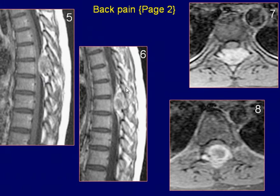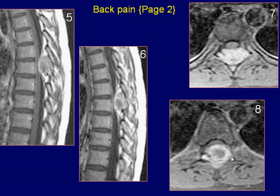Sagittal post-contrast T1-weighted images demonstrate heterogeneous enhancement of the lesion. Axial post-gadolinium fat-saturated T1-weighted images again demonstrate an enhancing lesion with a central non-enhancing area. There is involvement of the lamina and the spinous process of the thoracic vertebra by the lesion.